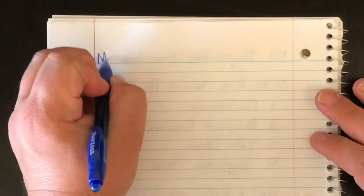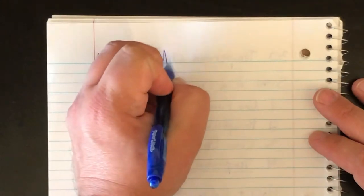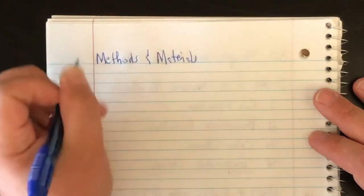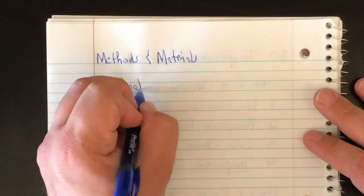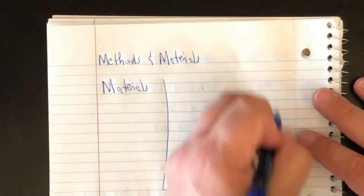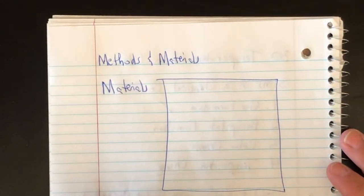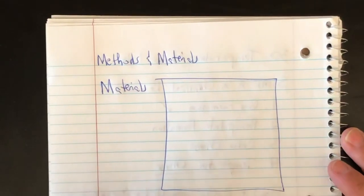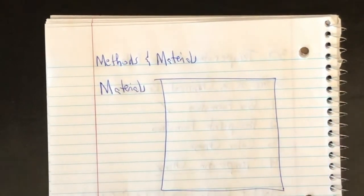As with the last lab, we're going to have methods and materials. We're going to start with the materials. You're going to write down the materials that are used during the lab. And then comes the methods. You're going to write down the steps that you follow to complete the lab.